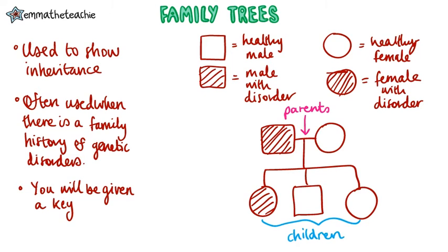A vertical line with branching other symbols means that they've got children. So we can see these parents have three children. If they're adult children, they may have a partner of their own and form parents together.